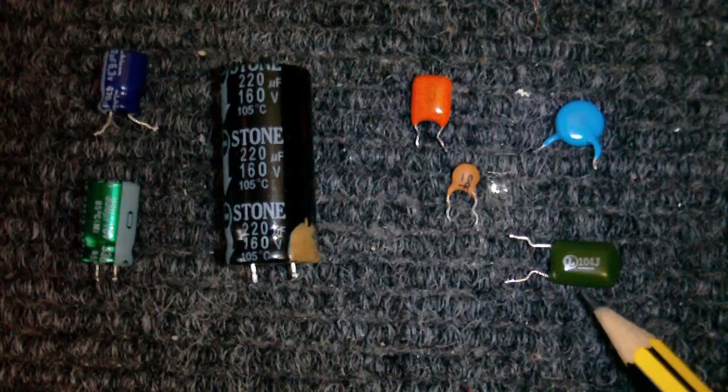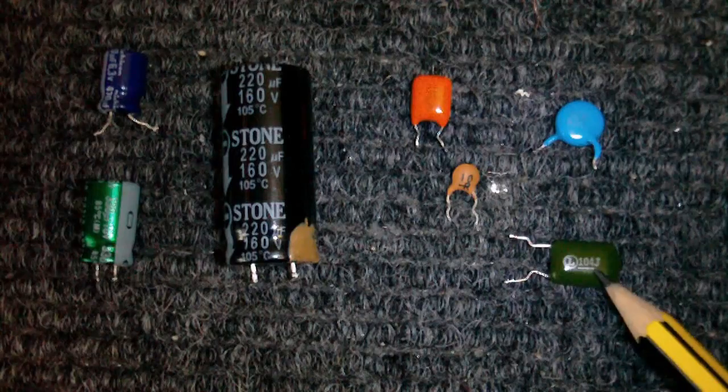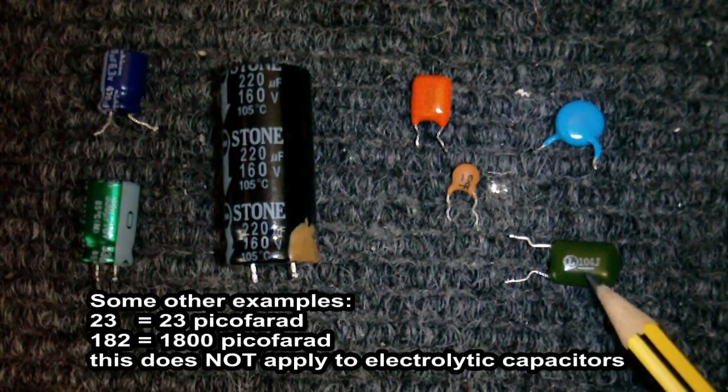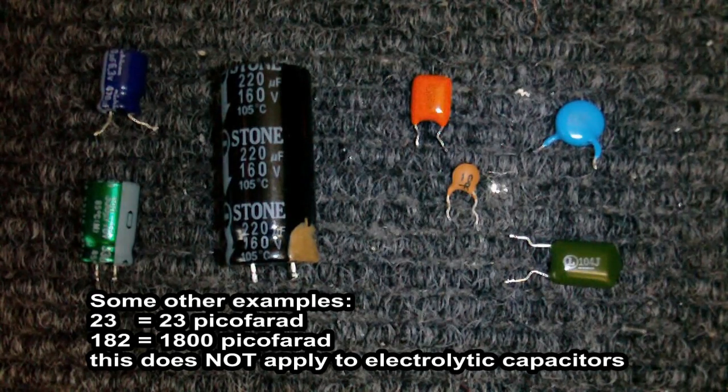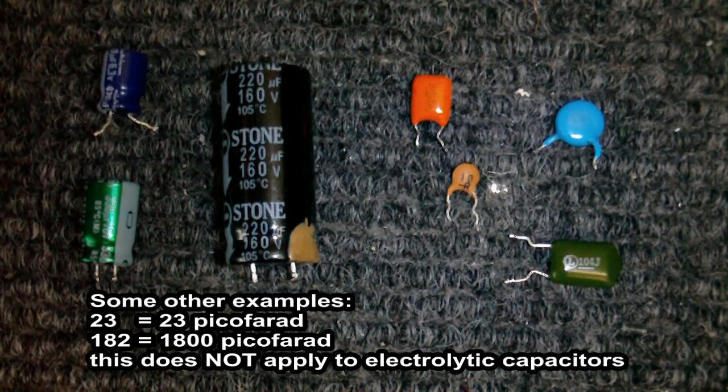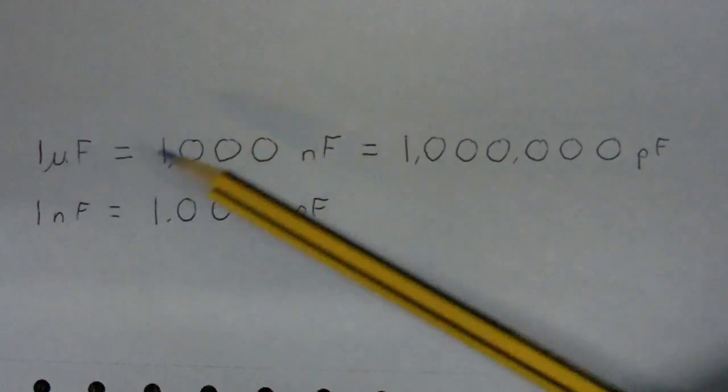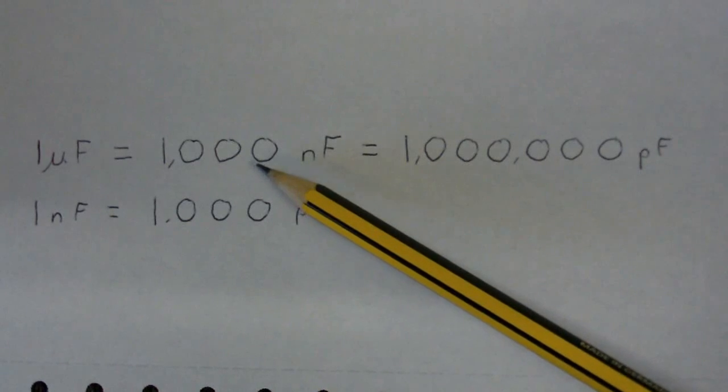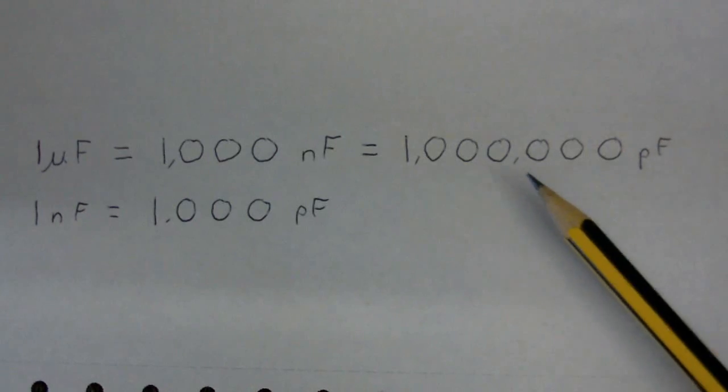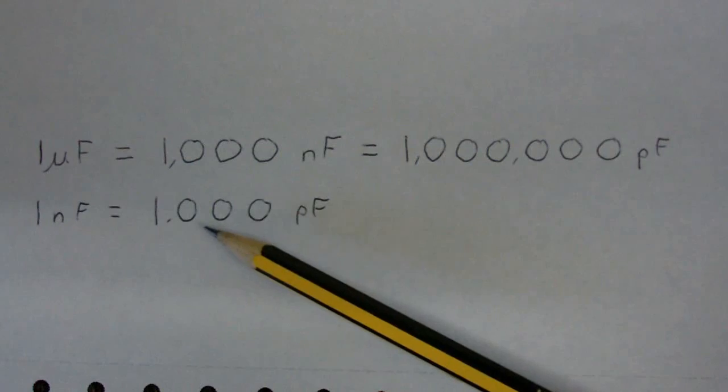Well, actually, no. So, if it's got three numbers on it, what you do, you take the first two numbers, then the third number, which in this case is four, tells you how many zeros to add. So this is 10 with four zeros. So that's 100,000 picofarads, which is also 100 nanofarads, and 0.1 microfarads.